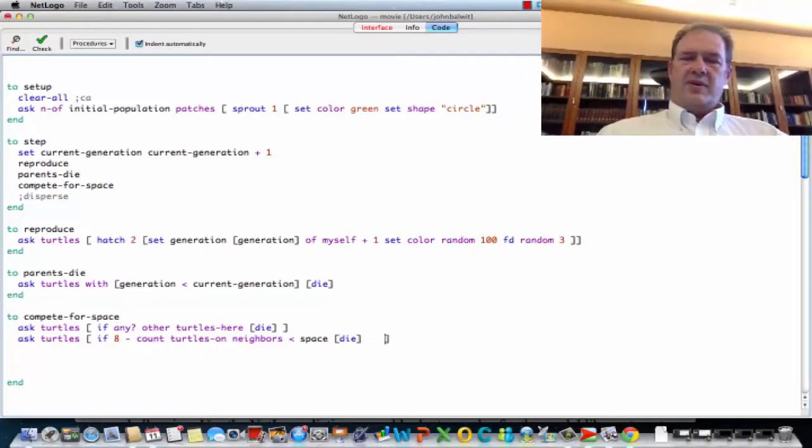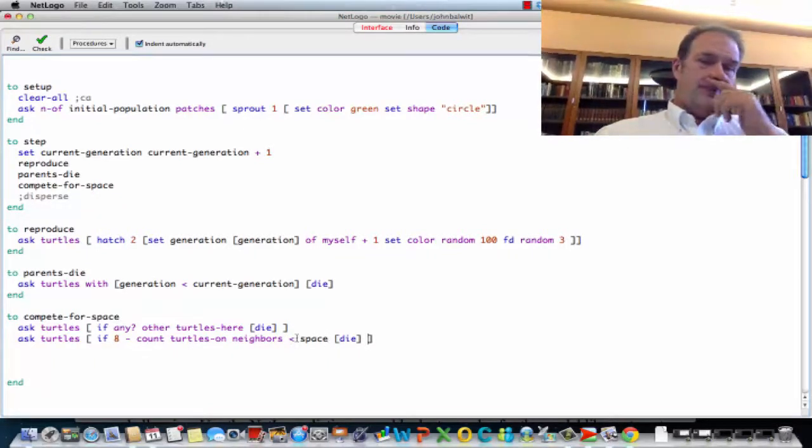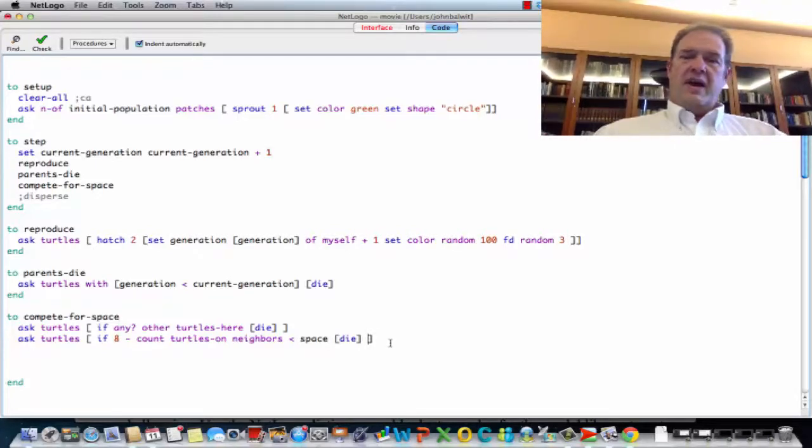Okay, so now we've created a condition that requires turtles to die if the empty space, eight minus the count of turtles on neighbors, is less than the space that they need. And we can set this space, you know, any number from one space to eight spaces.